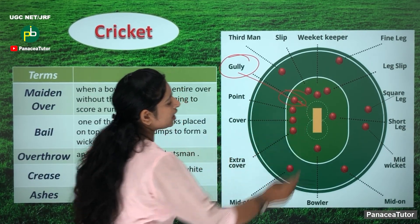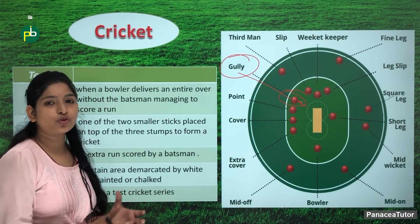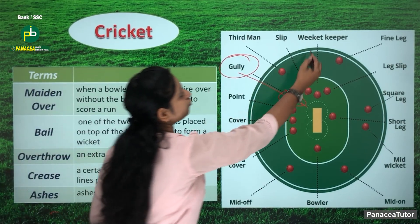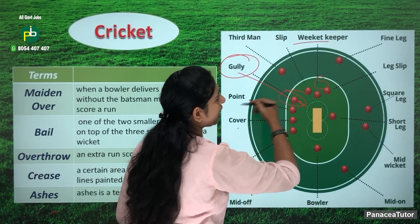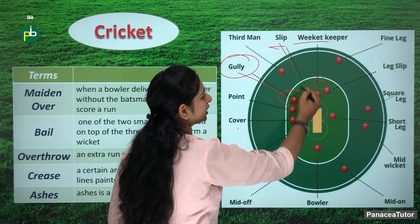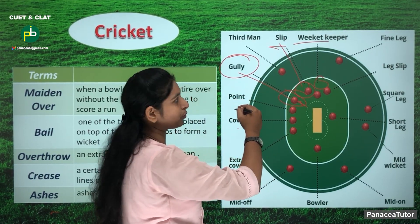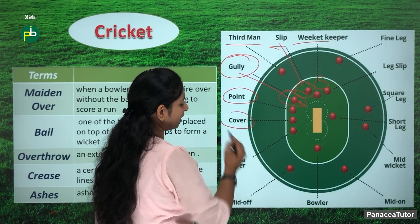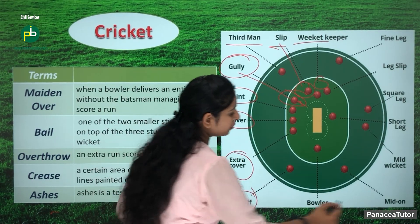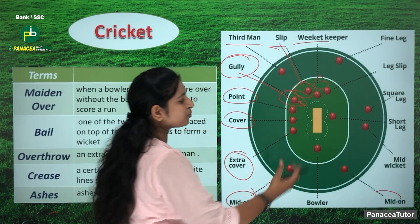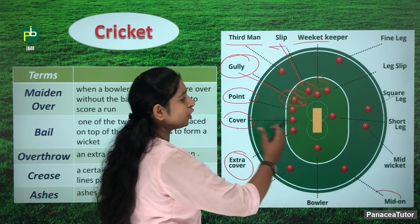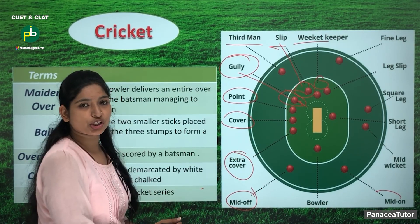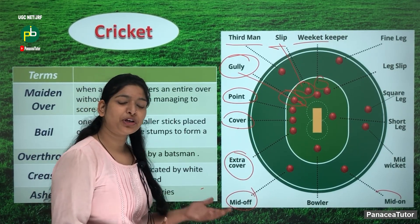If there is a fielding position, a player will stand in the gully position. Other fielding positions have been indicated throughout the ground where fielders should stand. The wicket keeper's position and third man position are also important fielding positions in cricket.